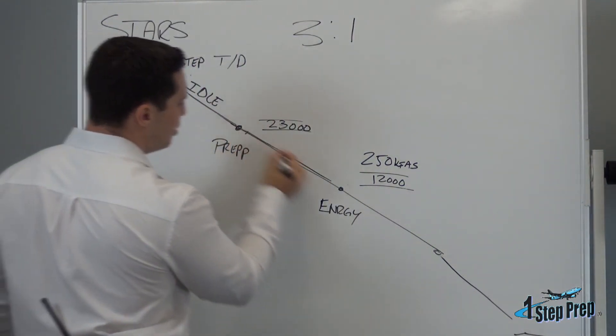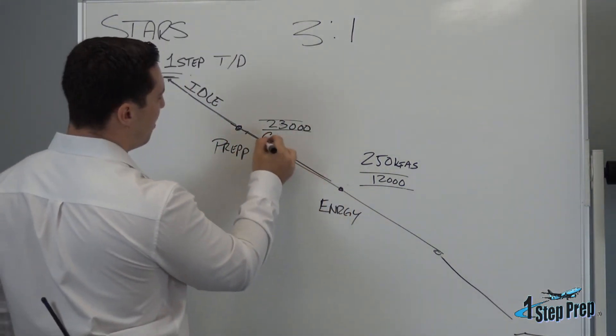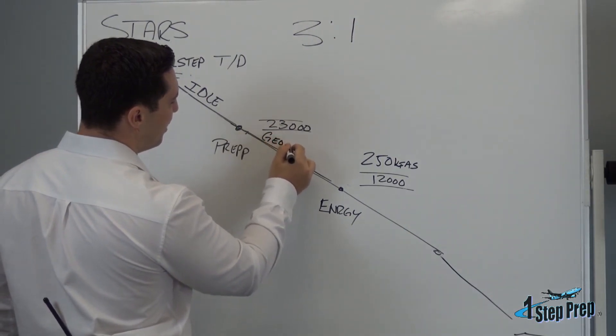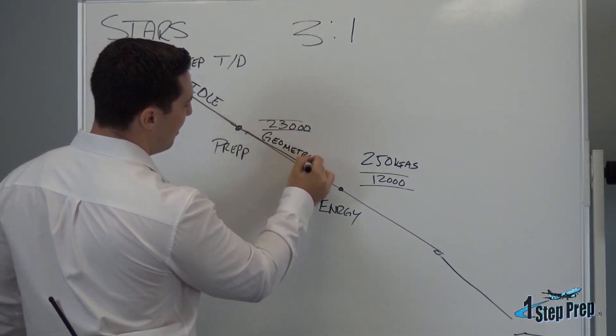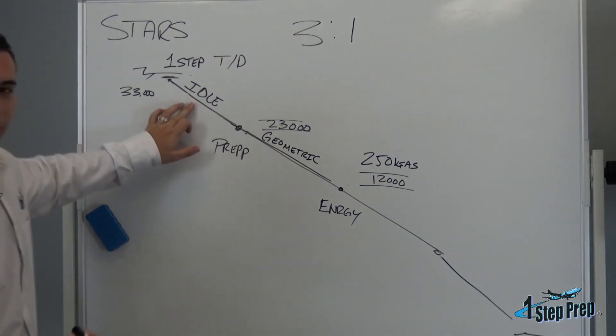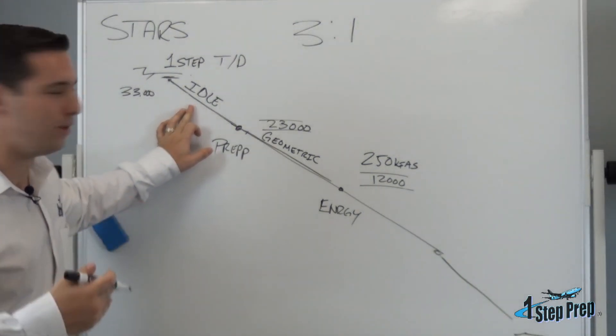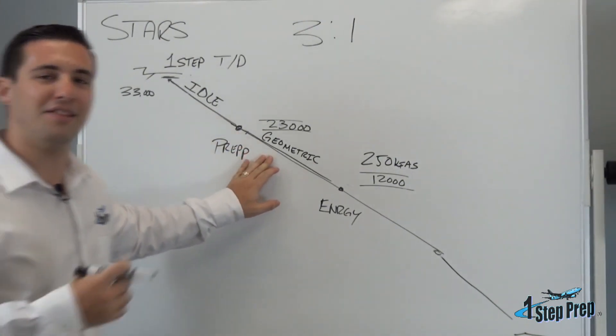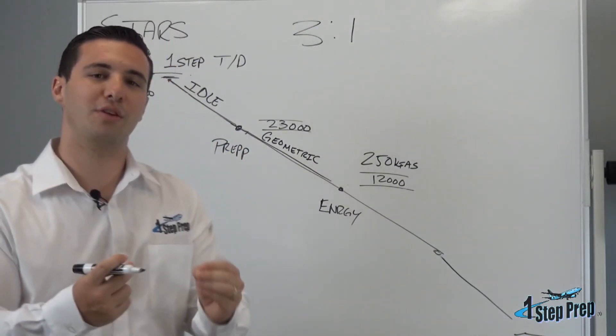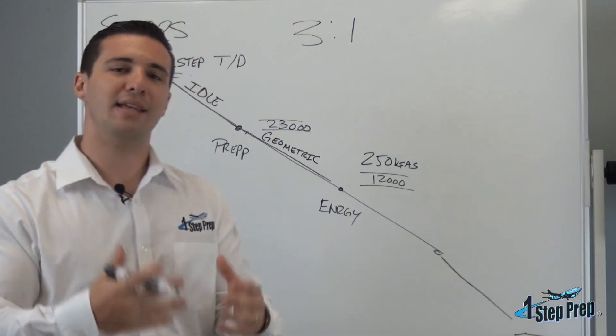And from prep to energy, it will now be what we call a geo or a geometric path. Now what is the difference? Idle path is exactly what it sounds like. Thrust is at idle. Geometric path is such that now my thrust will vary to maintain speed.